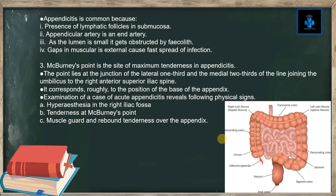Appendicitis is common because: number one, presence of lymphatic follicles in the submucosa; number two, the appendicular artery is an end artery; number three, as the lumen is small it gets obstructed by a faecolith; number four, gaps in the muscularis externa cause fast spread of infection. McBurney's point is the site of maximum tenderness in appendicitis. It lies at the junction of the lateral one-third and the medial two-thirds of the line joining the umbilicus to the right anterior superior iliac spine, corresponding roughly to the position of the base of the appendix.